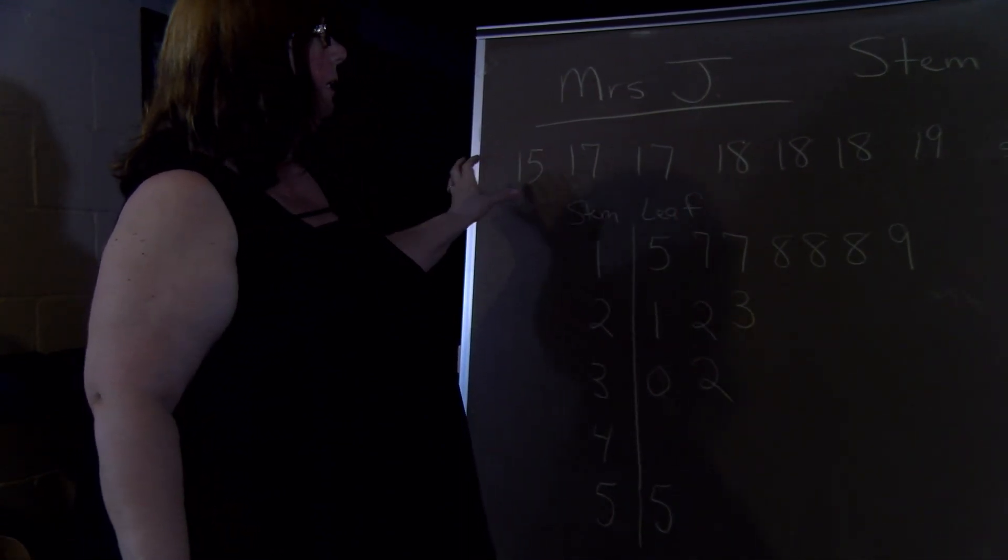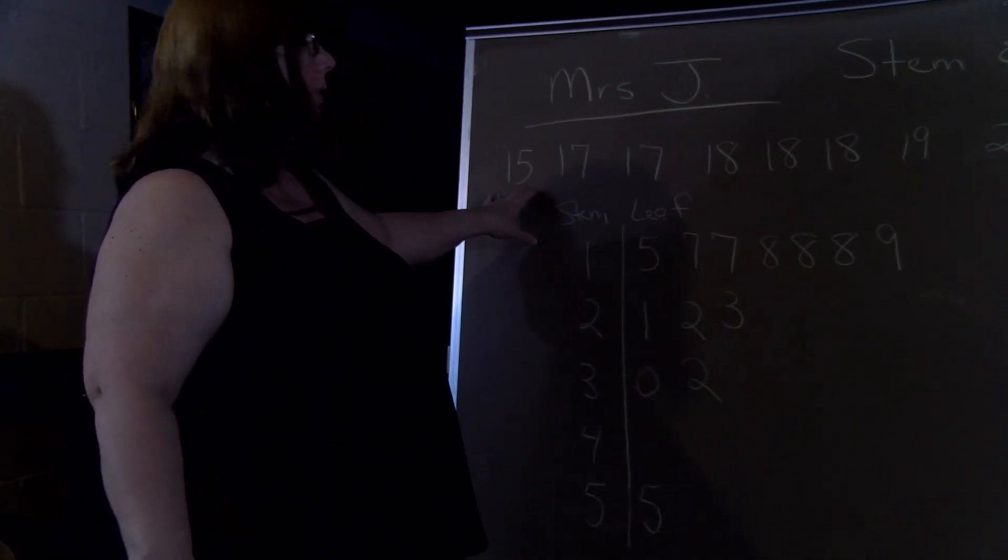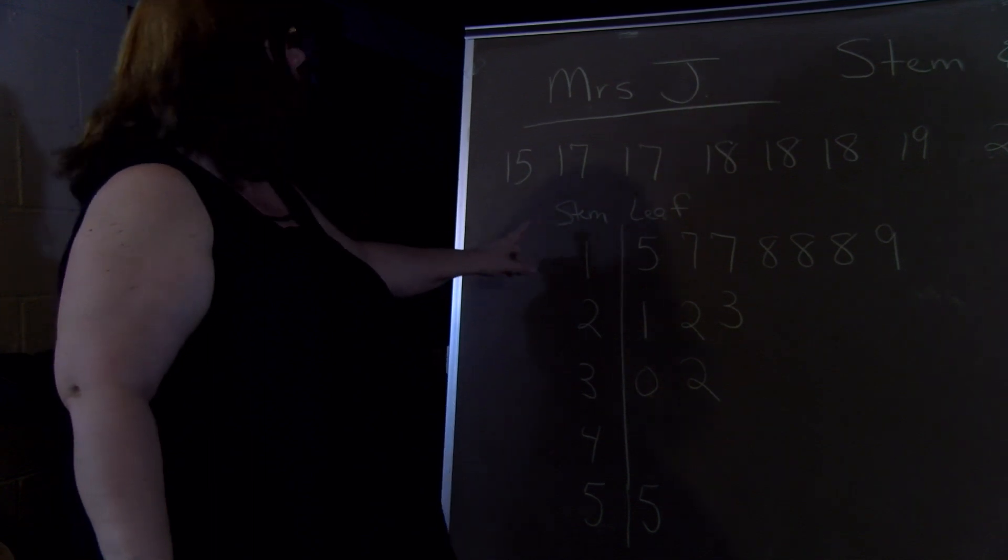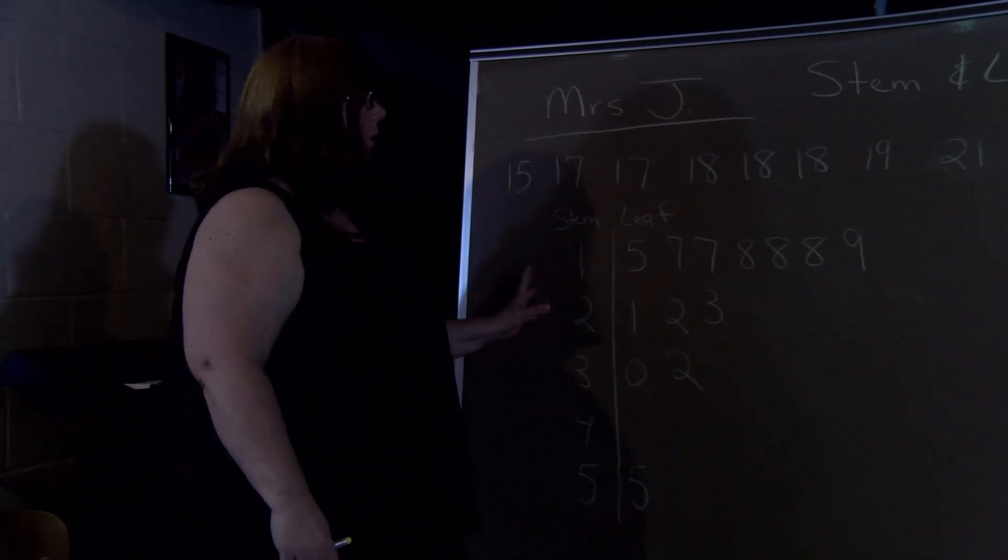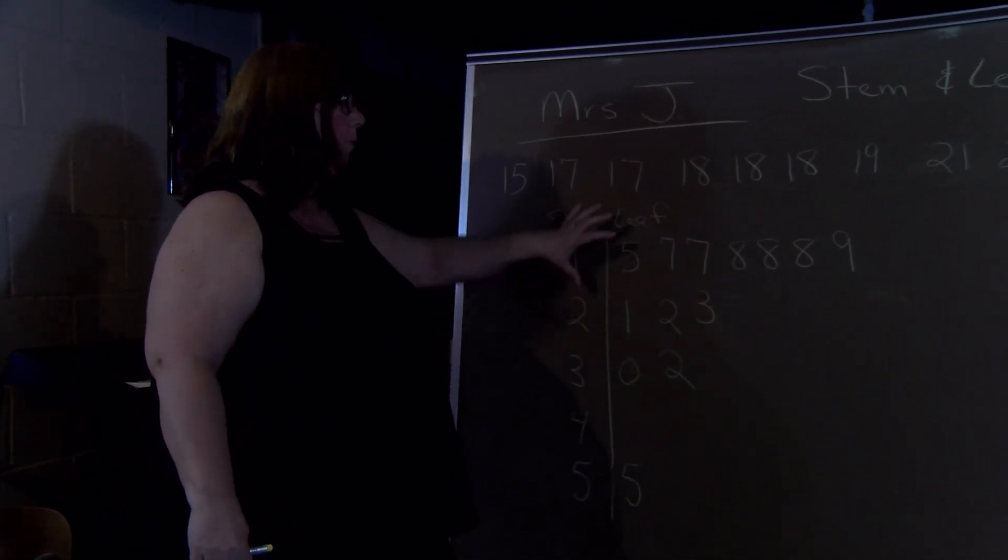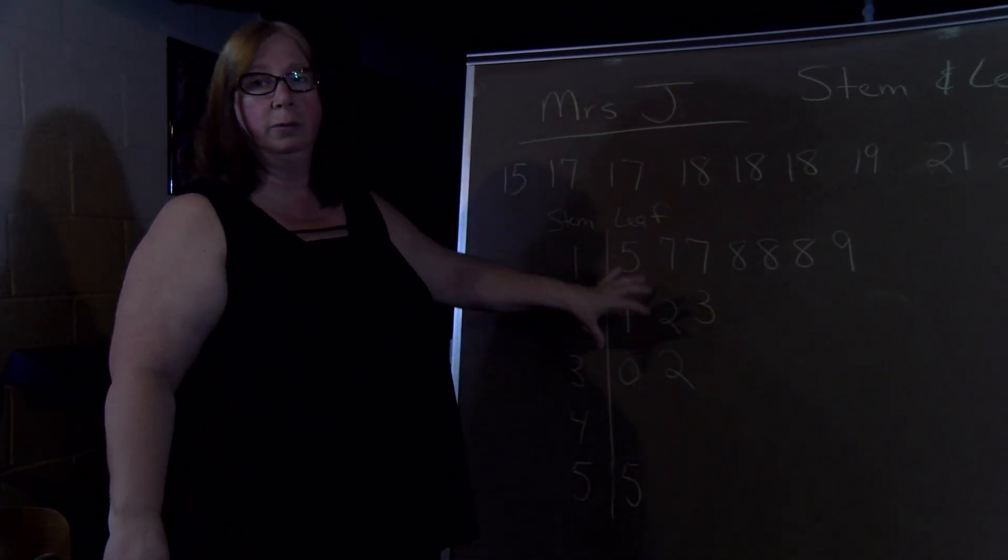It could be in thousands. So this is 15,000. Then it would tell you your leaf is the thousandth position. And so you want to watch for all that type of wording when they're automatically giving you just the graph.